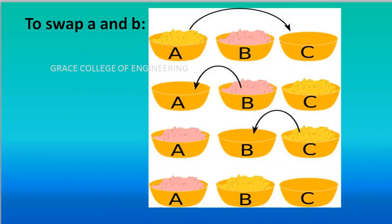Exchange the value of two variables — that is a swapping concept. Here, see there are three bowls: A, B, C. You can think of them like variables. A is one variable, B is one variable, C is one variable.